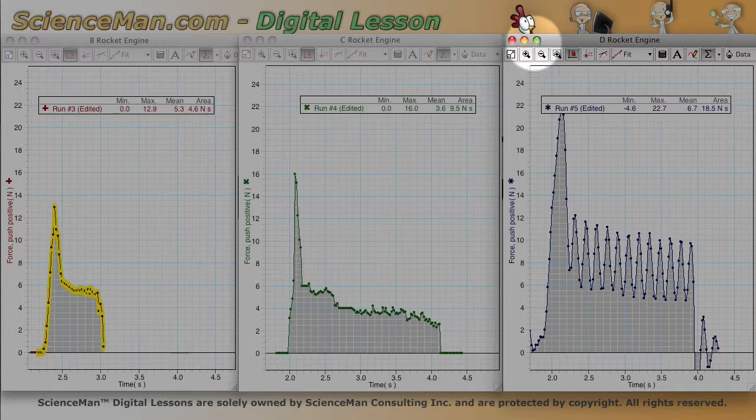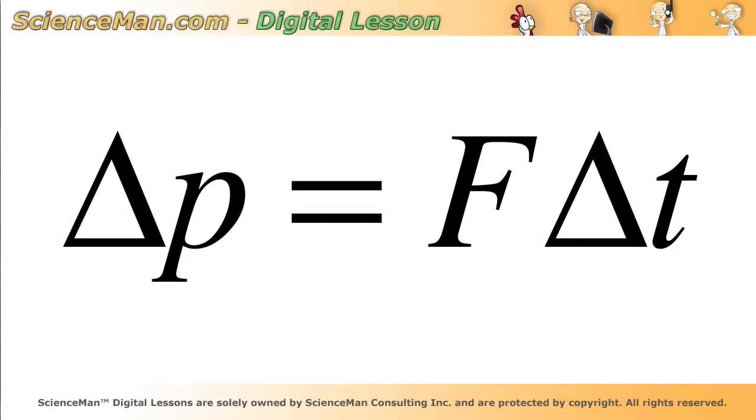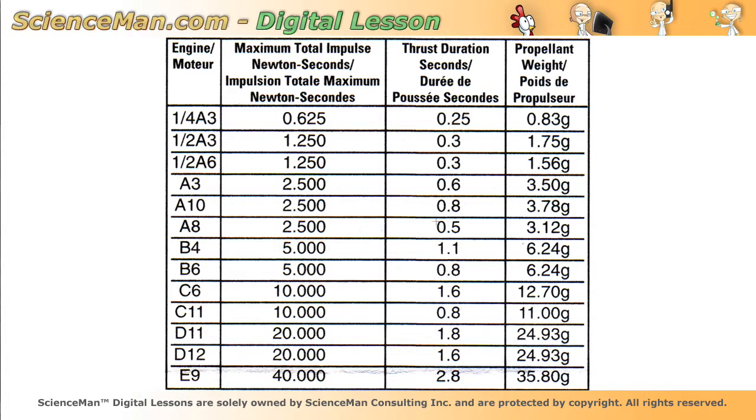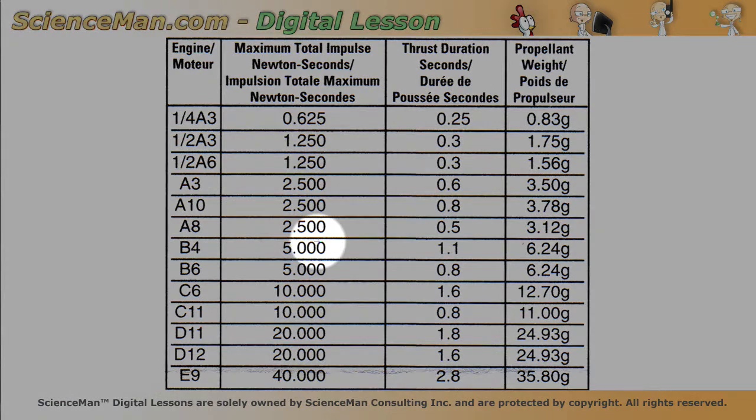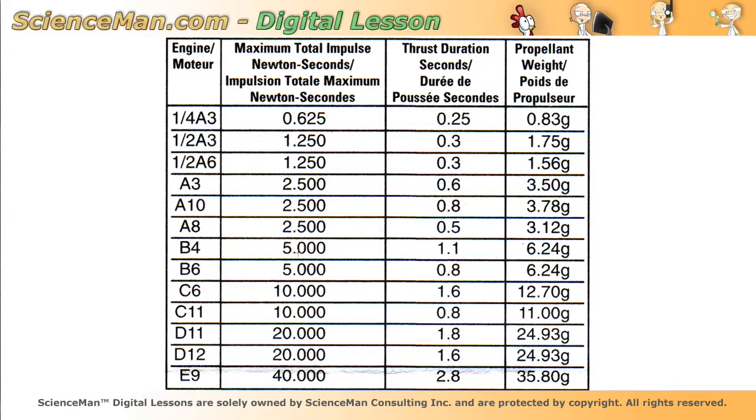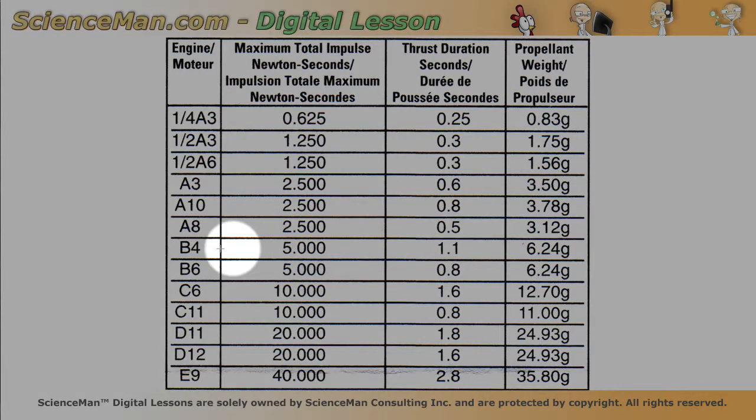Now, what's interesting about these rocket engines is that they often come with a chart telling you how much impulse you should get, and it's in the package. And as we see here, there's some variance because they design these rocket engines to do certain things—sometimes engines are designed to be part of multi-stage rockets. But as you can see, a B engine is supposed to deliver about 5 newton-seconds of impulse, and a C engine is supposed to deliver about 10, and a D engine is supposed to deliver about 20.